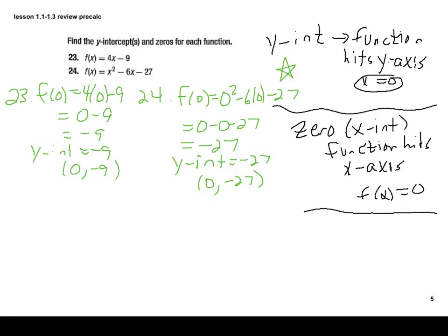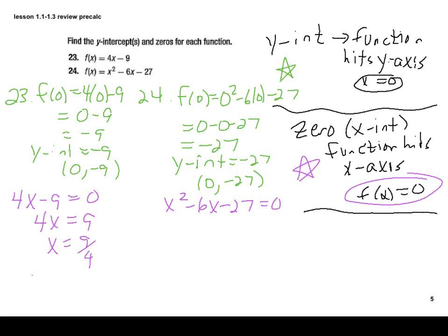Now let's talk about how you find the zeros. To find the zeros, we're going to set the function equal to zero. So let's do that in each case. For 23, our function is 4x minus 9. We're going to set that equal to zero. For 24, our function is x squared minus 6x minus 27 equals zero. Now let's solve each one of those independently based upon what they are. For 23, it's just a linear function. We're just going to move that 9 to the other side of the equation, divide by 4, and there you go. That's our x-intercept. So it's technically the point (9/4, 0).